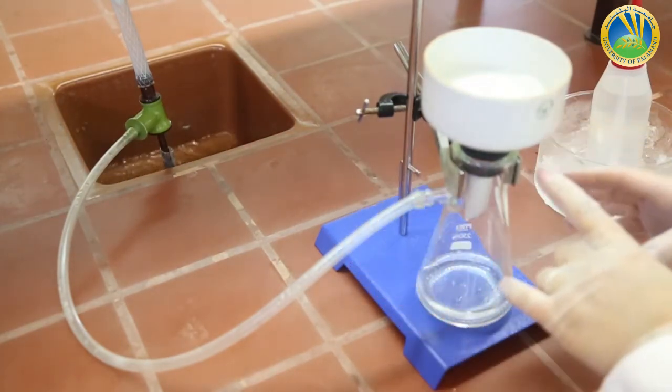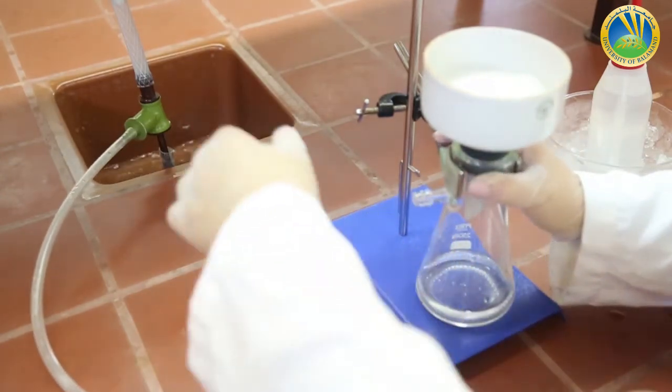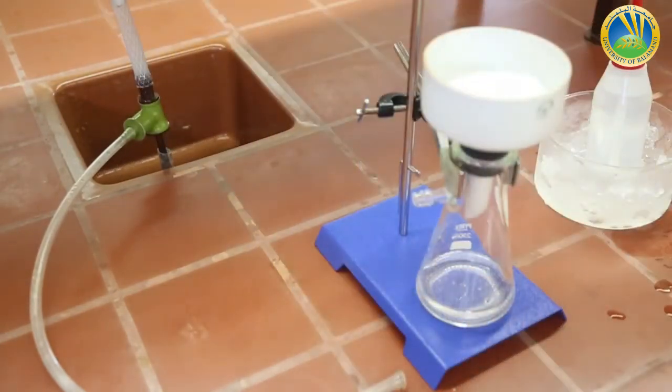To stop the filtration I have to break the vacuum first, and then turn the water off.